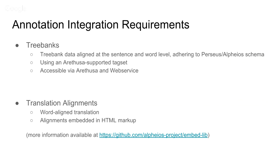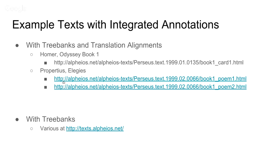Tree bank integration requires data aligned at sentence and word level adhering to the Perseus/Alpheus schema and using a supported tag set from Arethusa. For translation alignments, it needs to be a word-aligned translation with alignments embedded in markup. This is not available for many texts yet, but the library is growing and you can publish your own texts with annotations embedded. Coming soon: user accounts to aggregate word lists with context, usage examples integration starting with Latin, and a mobile UI.